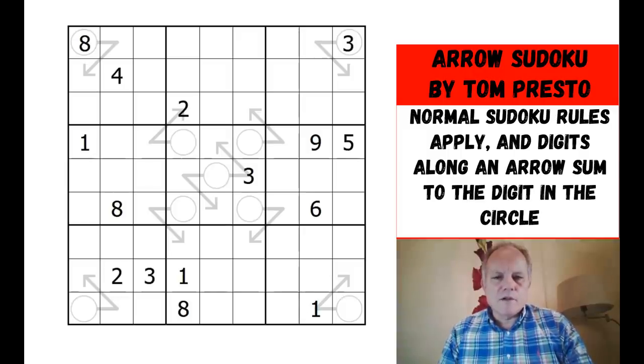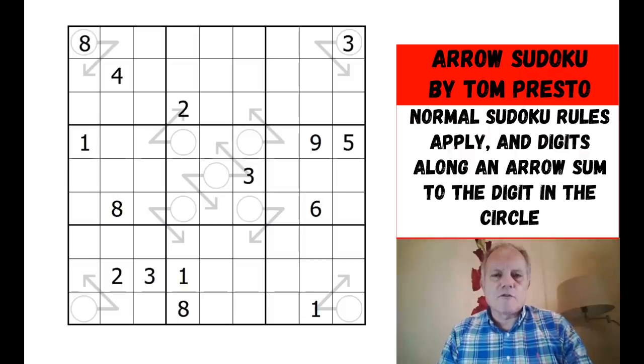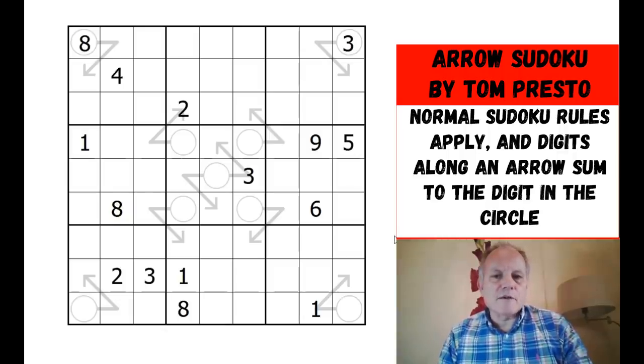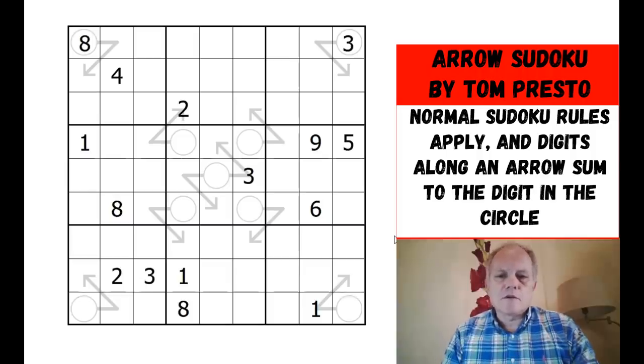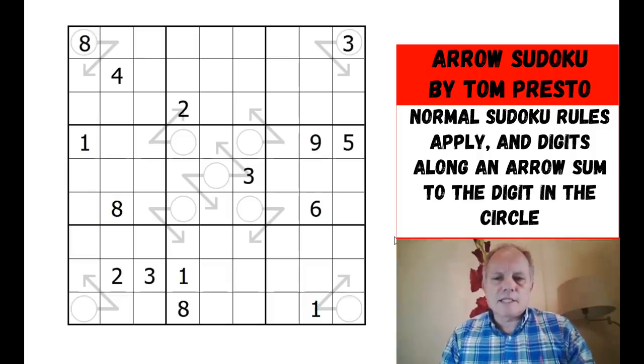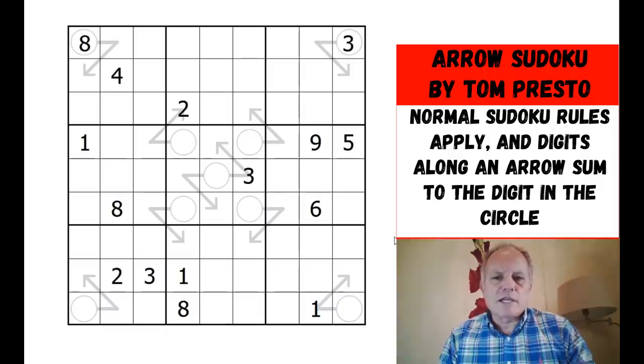Tom sent us a puzzle with gray cells and sums in it. I've recast it as an Arrow Sudoku, which is a reasonably traditional form where you add up the numbers along the arrow to get to the number in the circle. That's the rule basically, to go with normal Sudoku rules. I'm just going to have a go at it and see how we get on. Do try it on the link below the video.